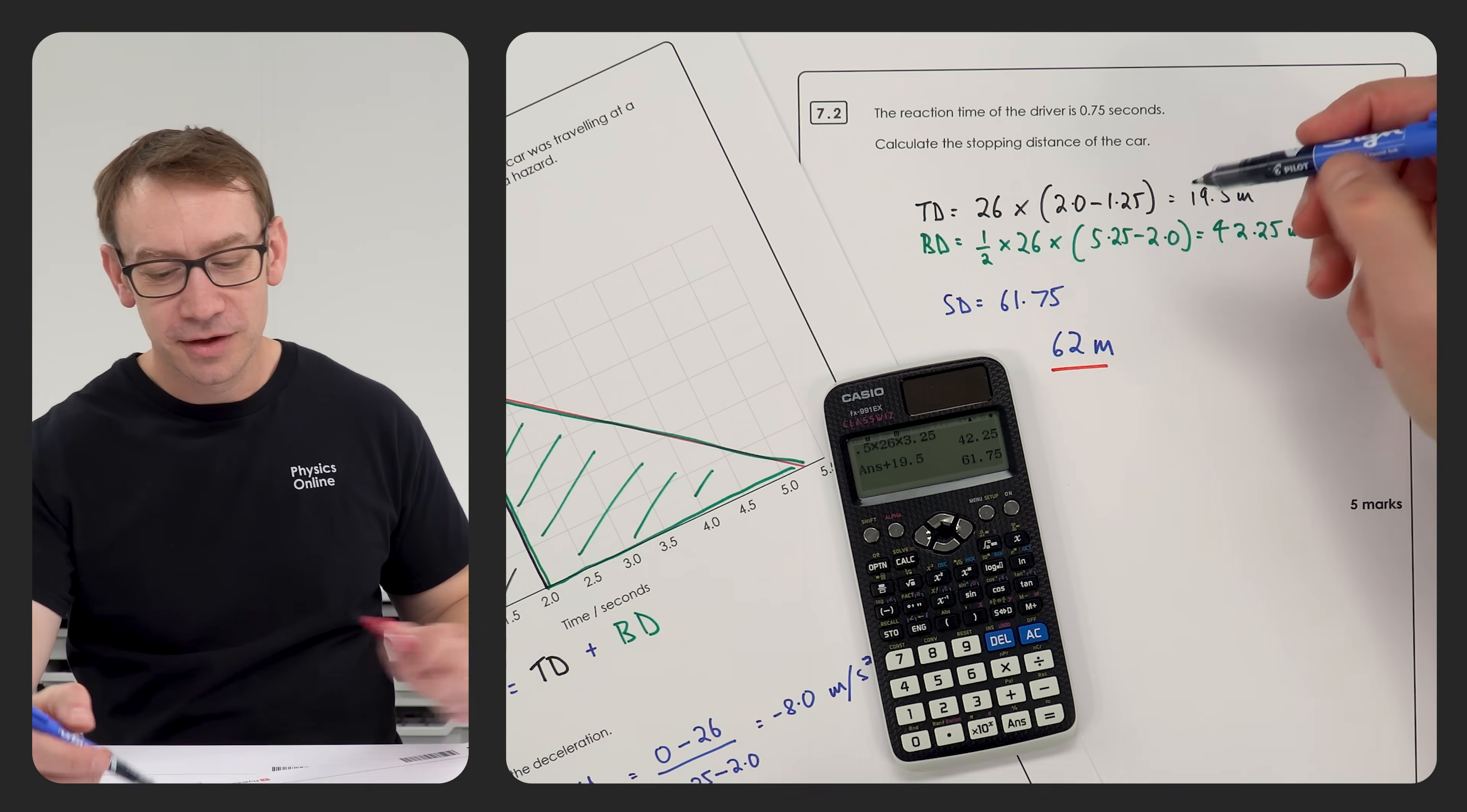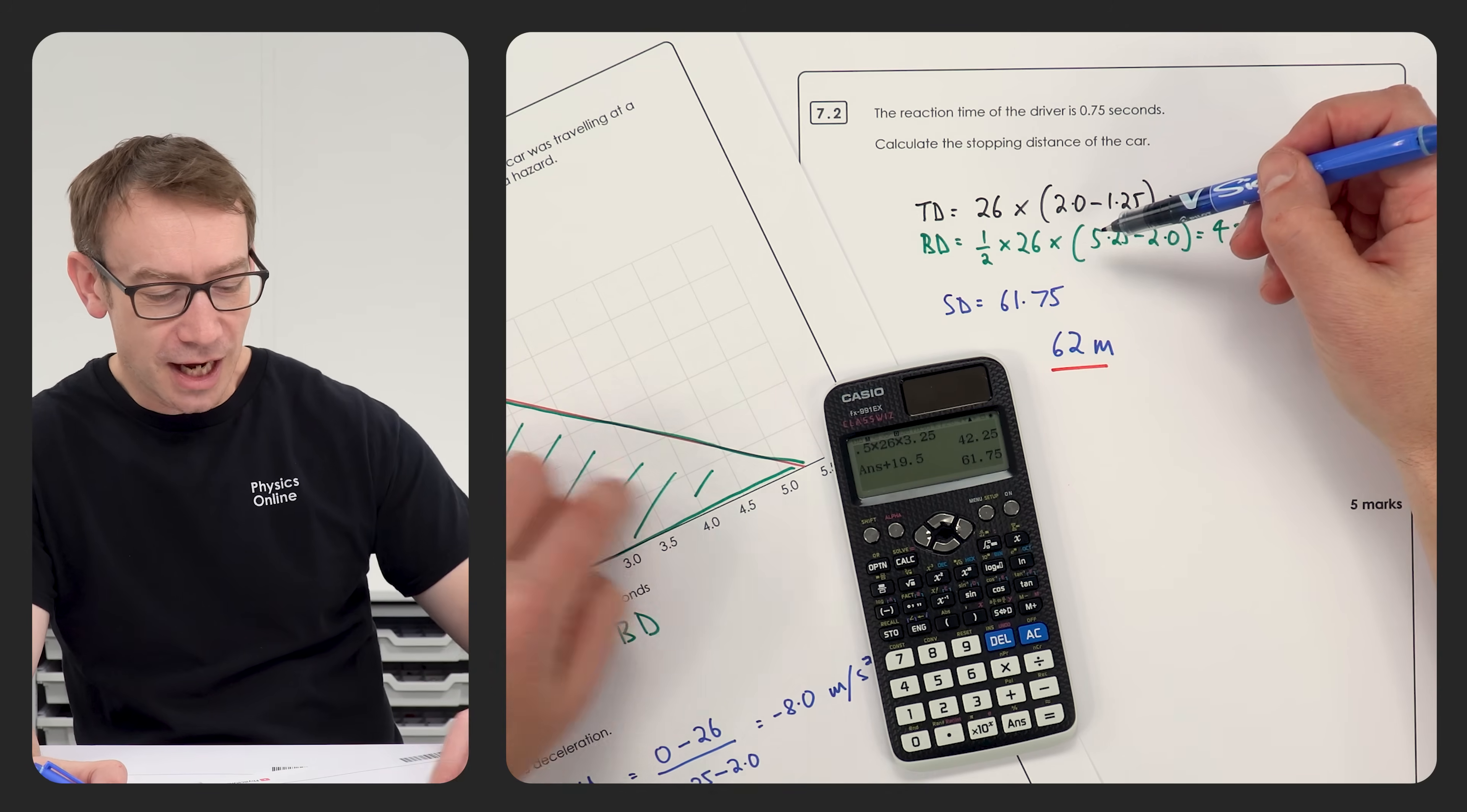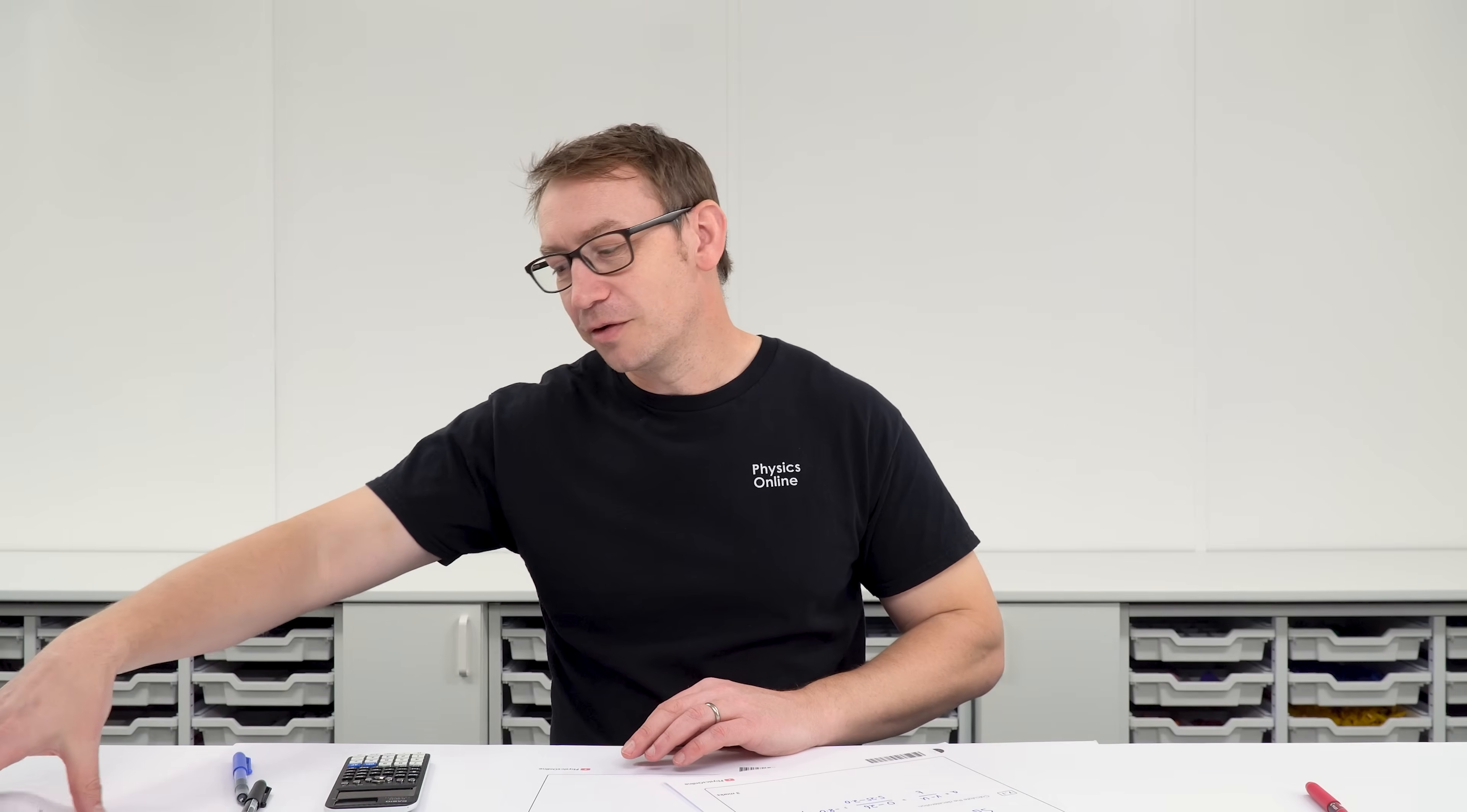You basically get two marks for this. You get a mark for your working out, actually working out the area, and then a mark for your value for the thinking distance. You then get another mark for working out the area of that triangle and therefore that distance, and the final mark is going to be for your final combined answer. So it says here, and I'm just going to have a look at what it said in the examiner's report.